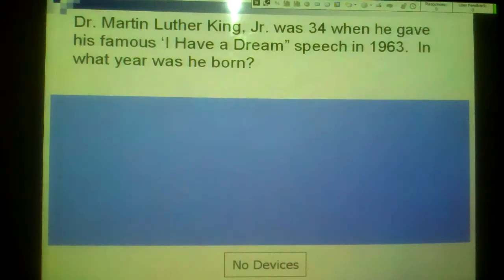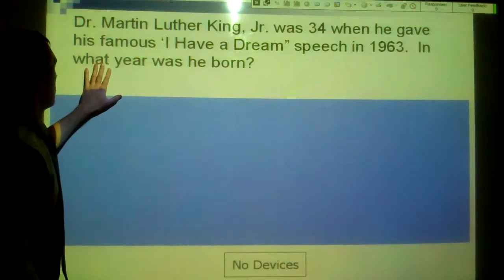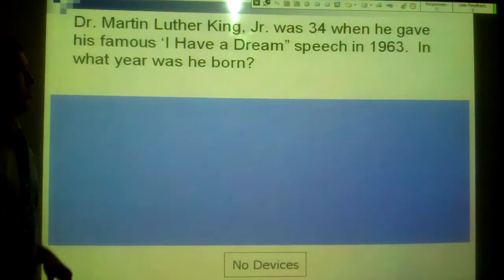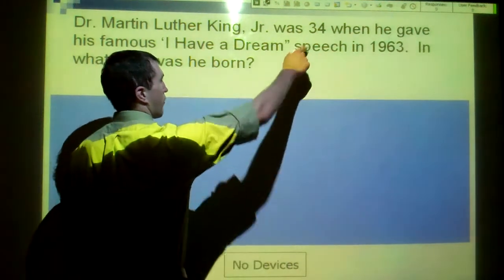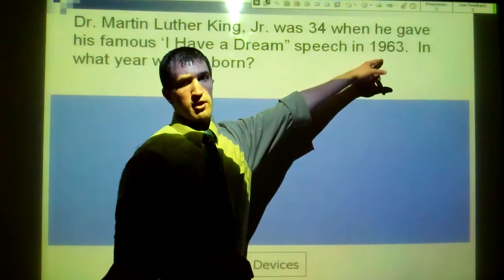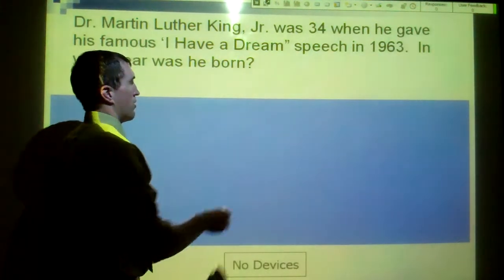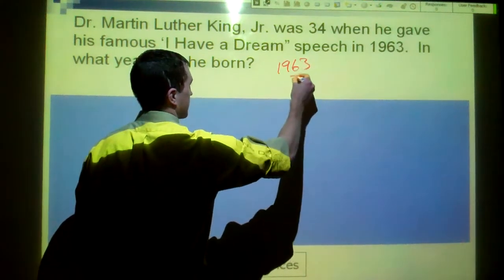This one deals with Dr. King. Dr. Martin Luther King Jr. was 34 when he gave his famous I Have a Dream speech in 1963. In what year was he born? 1963 he was 34. That means 34 years prior to this year, we should get when he was born. So 1963 minus his age.